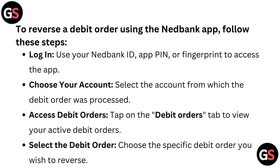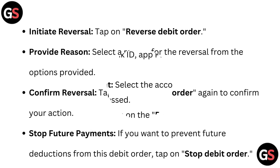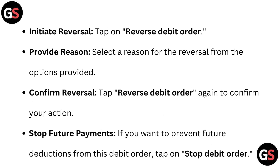Select the debit order: choose the specific debit order you wish to reverse. Initiate reversal: tap on reverse debit order and provide a reason. Select a reason for the reversal from the options provided. Confirm reversal: tap reverse debit order again to confirm your action.